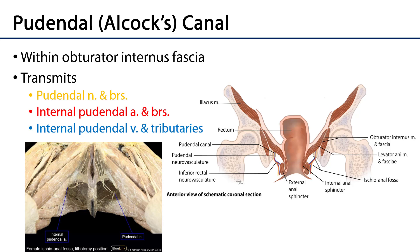The pudendal nerve, the internal pudendal artery, and the internal pudendal vein are all going to travel through the pudendal canal, also known as Alcock's canal. The pudendal canal is a space within the obturator internus fascia — the lining of the connective tissue along the medial aspect of the obturator internus muscle — and the nerve, artery, vein, and their branches and tributaries are conveyed through this space.